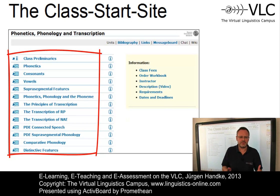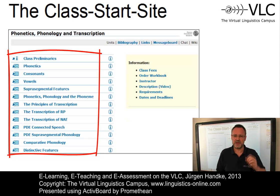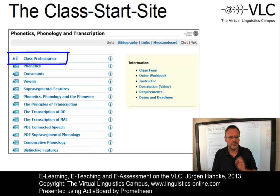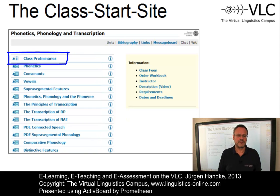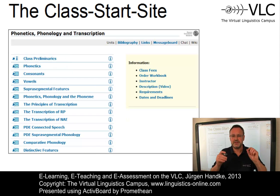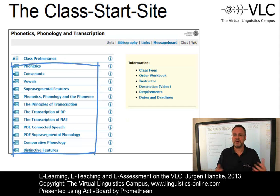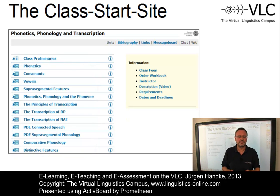Each class consists of a predefined number of units. In the case of this particular class, we have one introductory unit and twelve e-learning units. The introductory unit, the so-called class preliminaries, is mainly a textual repetition of what I am explaining in this video. The e-learning units contain the content of the class. And this is the point where we have to talk about our educational model.